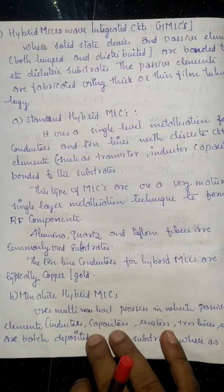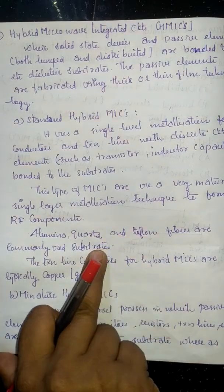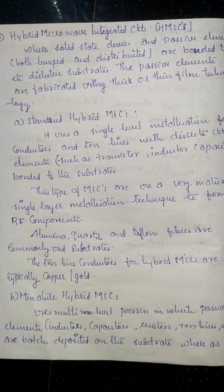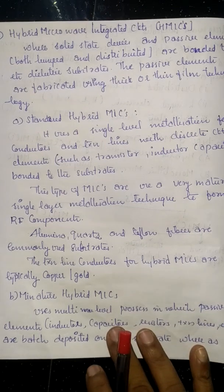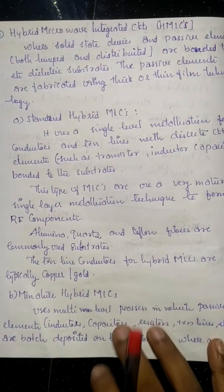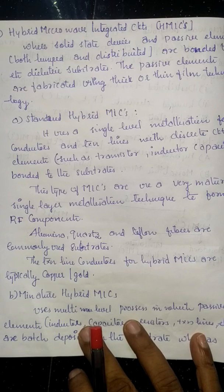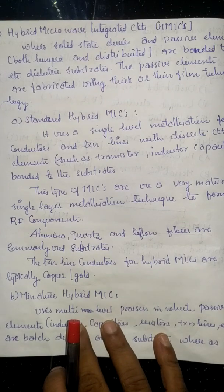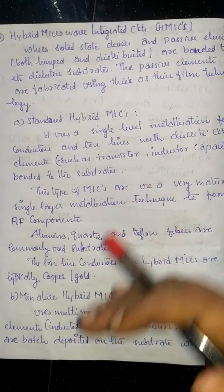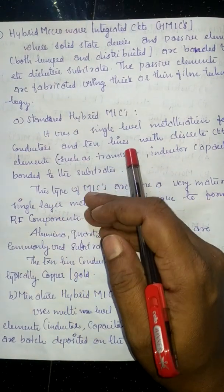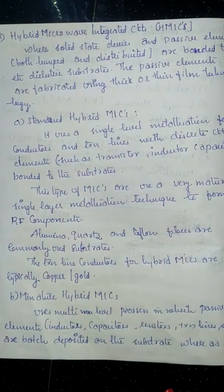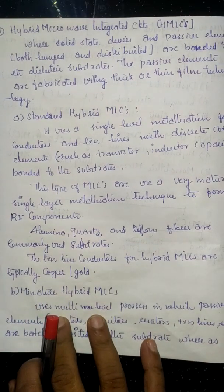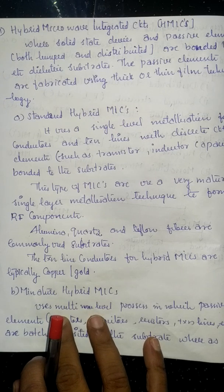Miniature hybrid MICs have a smaller size than standard hybrid MICs, but are larger in size than MMICs — monolithic microwave integrated circuits. So miniature hybrid MICs fall in between standard hybrid MICs and MMICs in terms of size. Because of this, miniature hybrid MICs are also called quasi-monolithic.